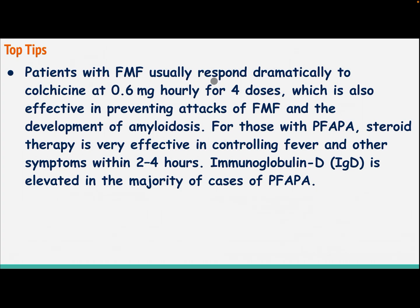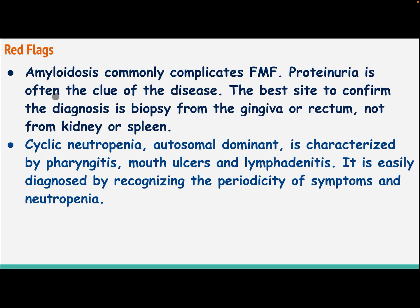Patients with familial Mediterranean fever usually respond dramatically to colchicine at 0.6 mg six-hourly for four doses, which is also effective in preventing attacks and the development of amyloidosis. For those with periodic fever with aphthous stomatitis, pharyngitis, and cervical adenitis, steroid therapy is very effective in controlling fever and other symptoms within two to four hours. Immunoglobulin D is elevated in the majority of cases. Amyloidosis commonly complicates familial Mediterranean fever; proteinuria is often the clue. The best site to confirm diagnosis is biopsy from the gingiva or rectum, not from kidney or spleen.